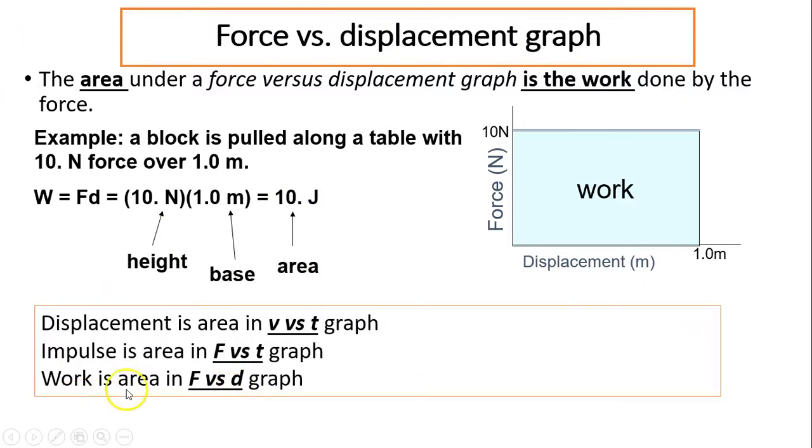That gives you the area. Area is work. We have also learned other area quantities. In velocity versus time graph, the area is displacement. In force versus time graph, the area is impulse. Now here in force versus displacement graph, the area is work.